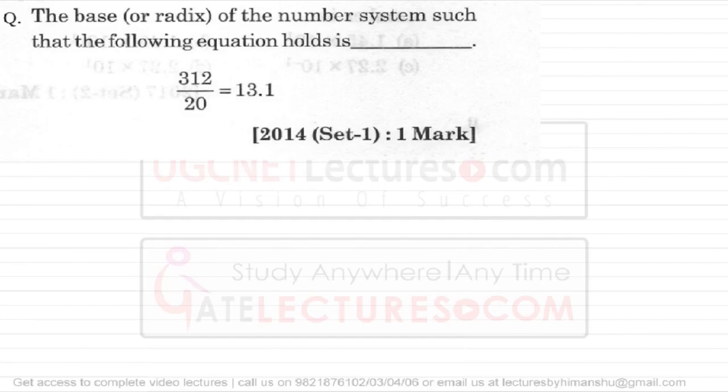Now look at the next question, which was asked in GATE 2014 for one mark. They are asking for the valid base for which this equation holds true. You can see that this equation is not valid for the decimal number system — in decimal the answer would have been 15.6, but the given answer is 13.1. So we have to find the base of the number system.